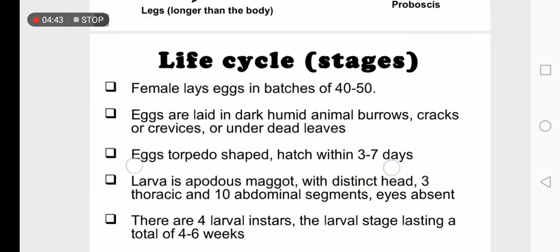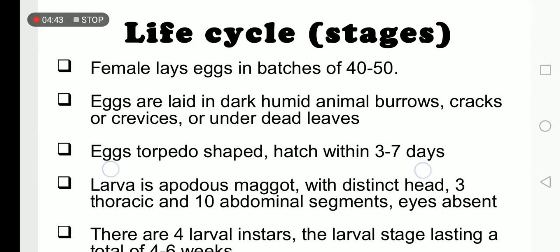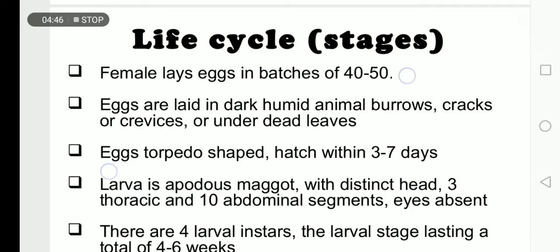Life cycle stages: Females lay eggs in batches of 40 to 50. Eggs are laid in dark, humid animal burrows, cracks or crevices, or under dead leaves. Eggs are torpedo-shaped and hatch within 3 to 7 days.